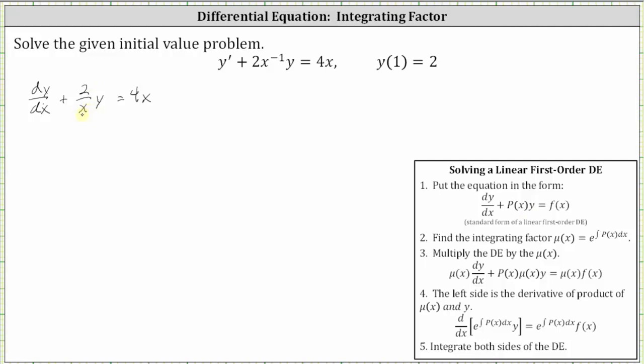For step two, the integrating factor mu of x equals e to the power of the integral of p of x dx. In our case, mu of x equals e to the power of the integral of two divided by x dx.